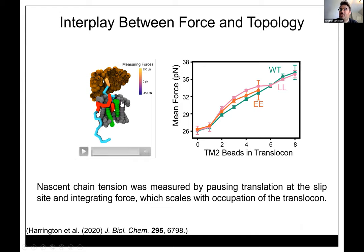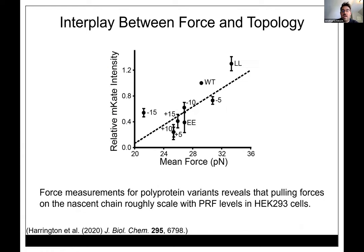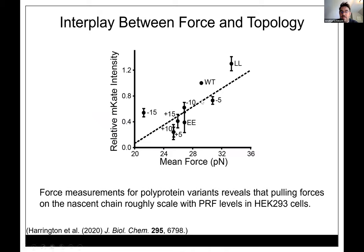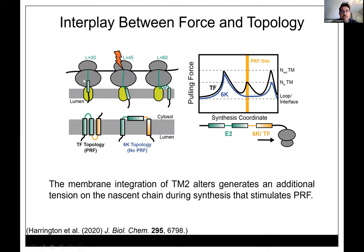The simulations showed that the double-E and double-L mutants don't affect specific interactions — they just change the probabilities that the nascent chain goes into the membrane. For all three mutants, the further down the translocon the nascent chain goes, the more force goes up on the ribosome. When we simulated all the mutants — those changing linker length and those changing hydrophobicity — as force goes up, so does the intensity of our fluorescent reporter in HEK 293 cells.